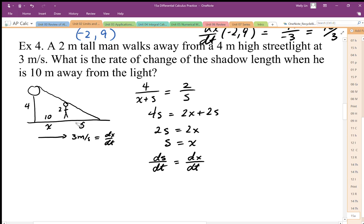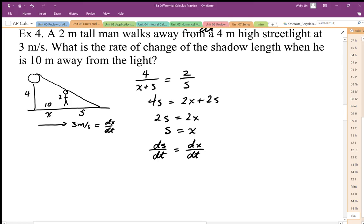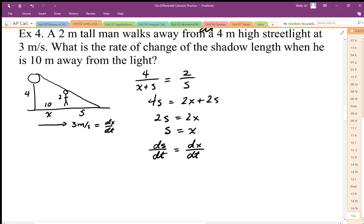If these two distances are always the same, these lengths X and S are always the same, then the rate of change of both of those distances must also match, which they do. So if dX by dt is 3 meters per second, then dS by dt must also be 3 meters per second.